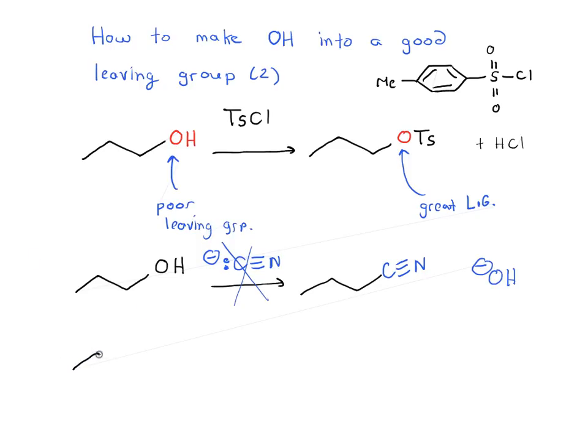Now, instead, if we convert our OH into an OTs, into a tosylate, now this reaction works like a champ. So, take our tosylate and we treat it with C triple bond N, so our cyanide ion, now this reaction works great. And we can get, in this case, our alkyl cyanide or nitrile as they are called. And we displace the tosyl anion.